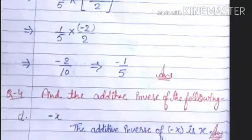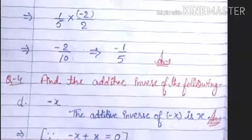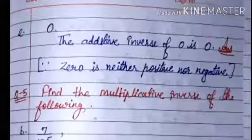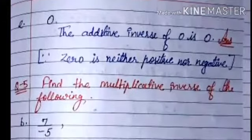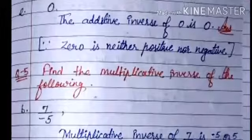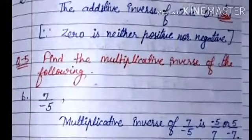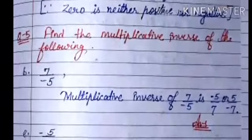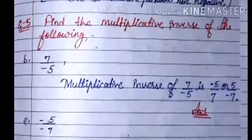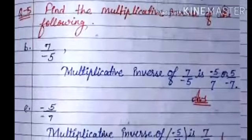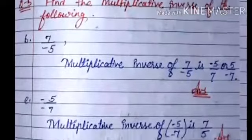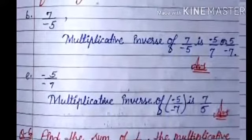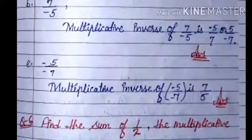The next question: find the additive inverse of the following. As you know, the additive inverse of minus x is x, so that the sum equals zero. For the additive inverse of zero — since zero is neither positive nor negative, the additive inverse of zero is zero. Question number five: find the multiplicative inverse of the following. The multiplicative inverse of seven upon minus five is minus five upon seven. For the next part, we interchange numerator and denominator, so the multiplicative inverse of minus five upon seven is seven upon five.